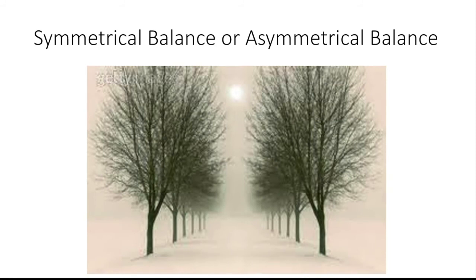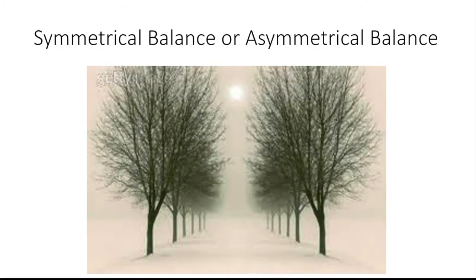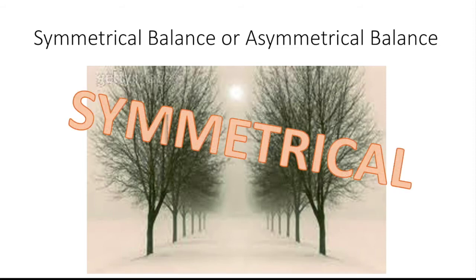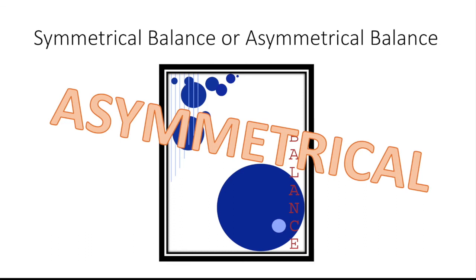Let's play a little game — I'll put something up and you shout out whether it's symmetrical or asymmetrical balance. First one — symmetrical! Pretty easy, they're pretty much the same on both sides. How about that one? Asymmetrical — you can see it's got something big on one side being balanced with smaller stuff on the other side.